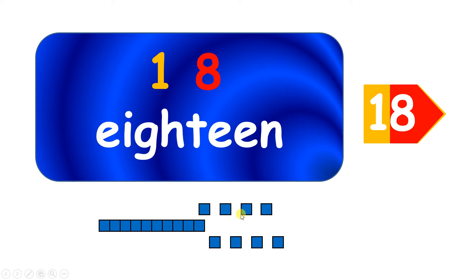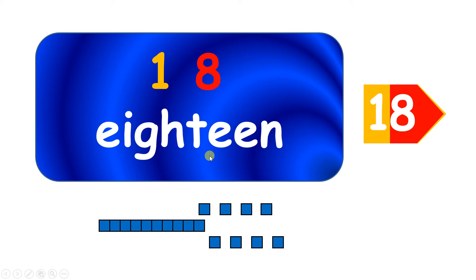Eighteen — one ten and eight left over. Now you're probably getting the hang of this. We have a special word for the ones left over — we call them units. So the number eighteen is a two-digit number. It has the digits one and eight. The one tells us that we have one ten. The eight tells us that we have eight blocks left over once we've made our line of ten, so we have eight units. So the digits one, eight — one ten and eight units.